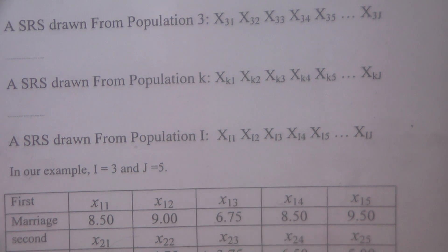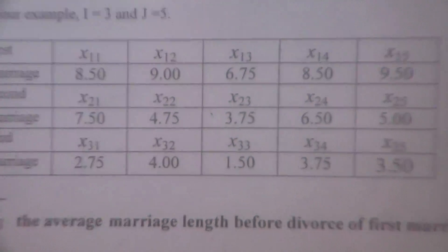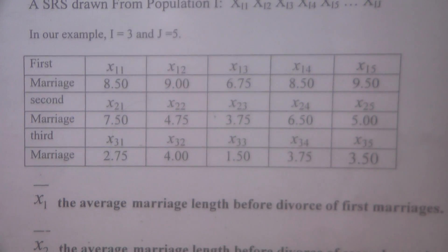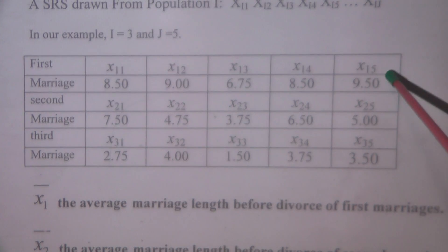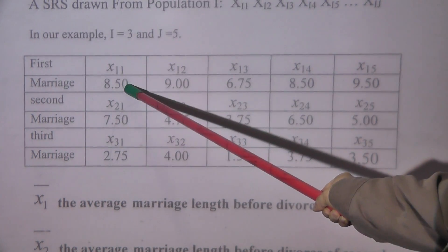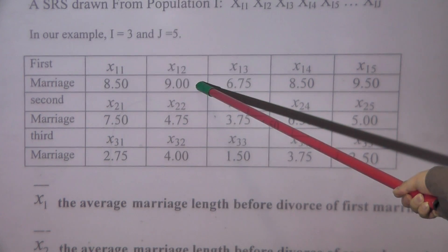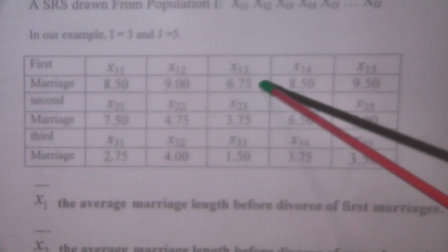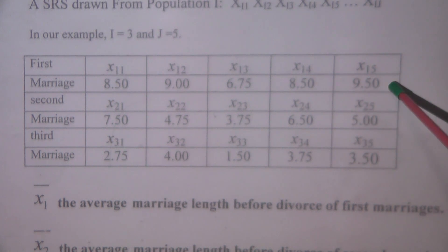Now let's look at the data and the notation used. For the first marriage group: x₁₁, x₁₂, x₁₃, x₁₄, x₁₅. The first couple lasts 8.5 years, the second couple lasts 9 years, the third couple lasts 6.75 years, the fourth couple lasts 8.5 years, and the fifth couple lasts 9.5 years — all for their first marriage.